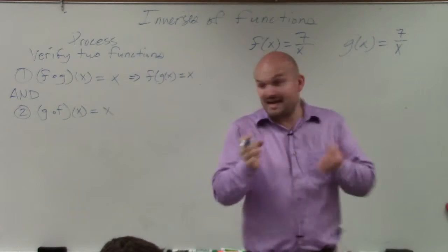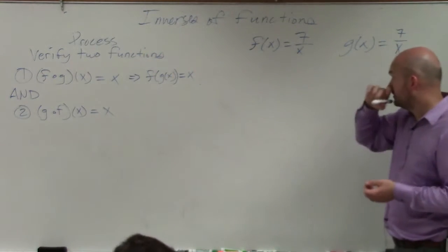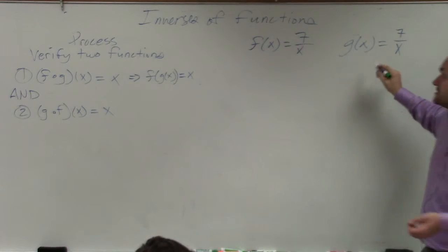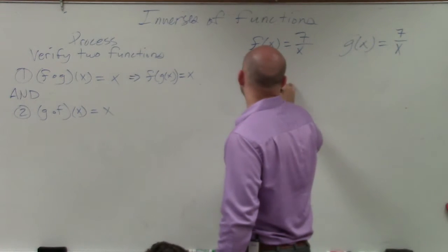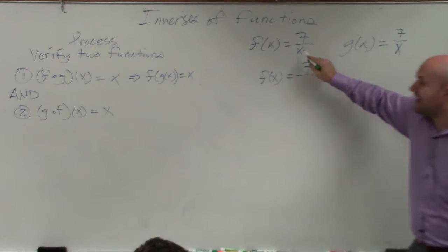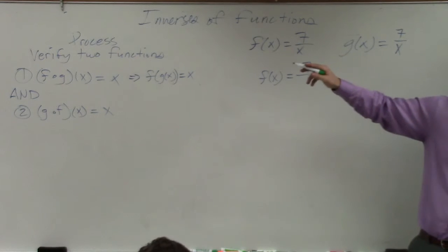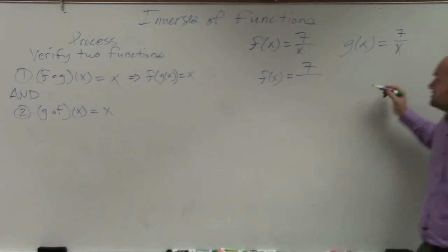So basically what you're going to do is take the g of x function and plug it into the f of x function. So in this case, g of x is 7 over x. So I would have f of x equals 7 over, instead of x, I'm going to plug in g of x because that's my new input variable. g of x is 7 over x.